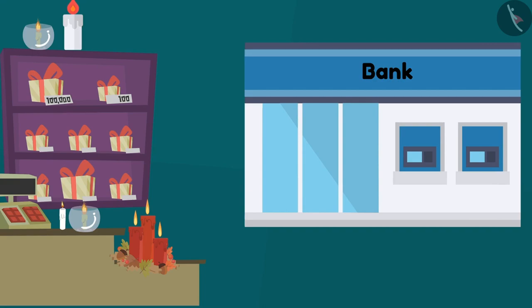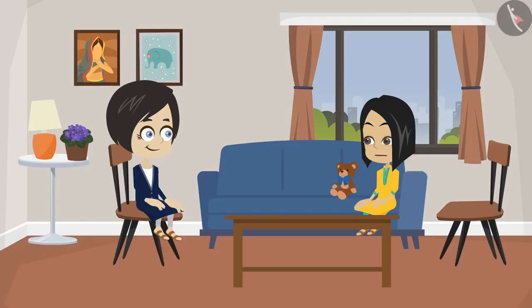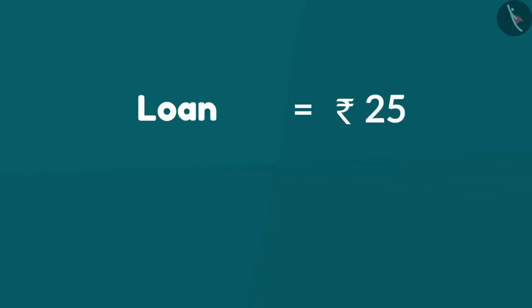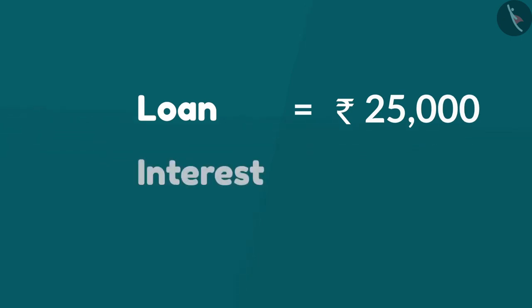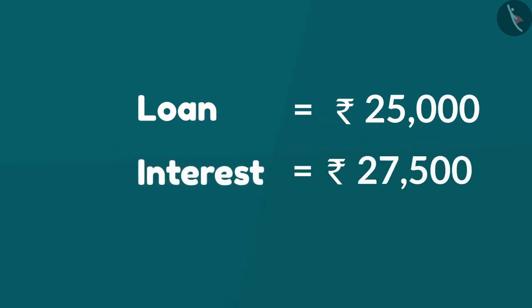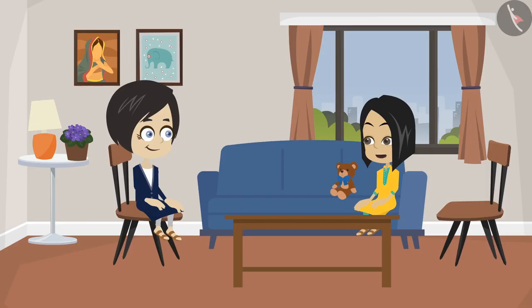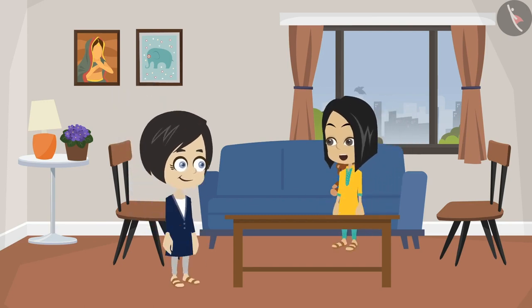You know, my dad also took a loan from the bank, Bubbly. Do you know that we have to pay a huge amount of interest to the bank? My dad took a loan of 25,000 rupees and he has to pay 27,500 as interest. But my dad doesn't need to pay that much. Then why does your dad have to pay so much? Come on, let us ask my dad.